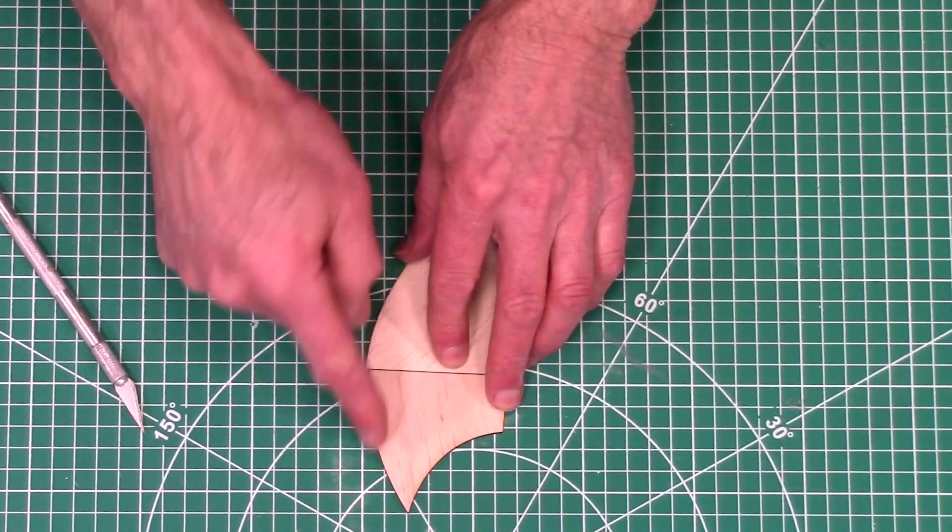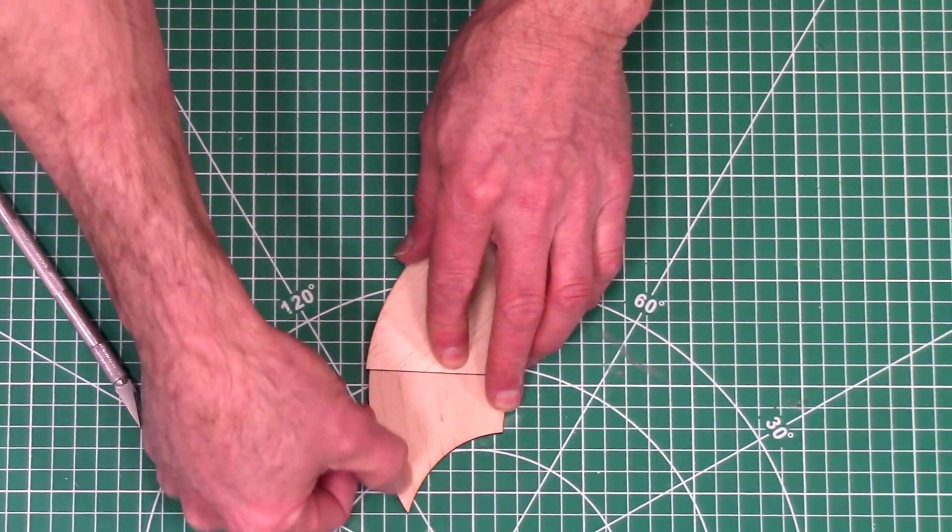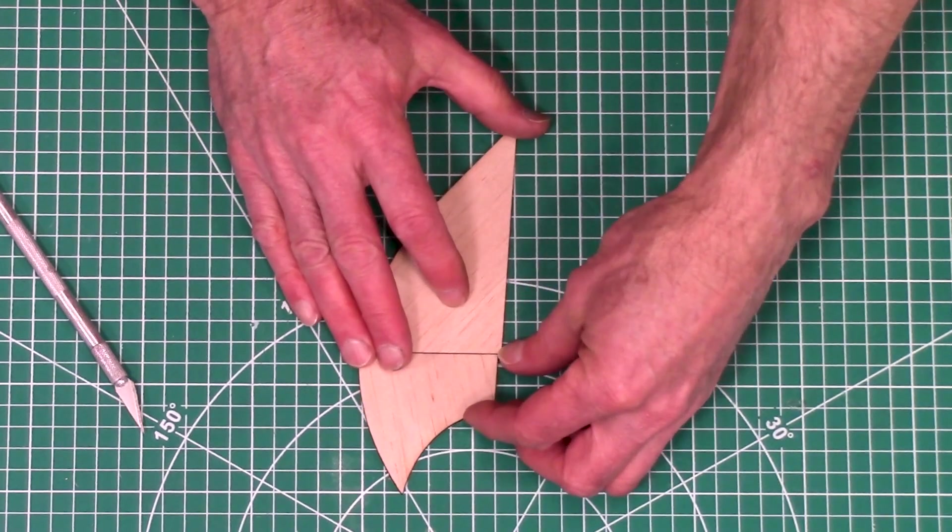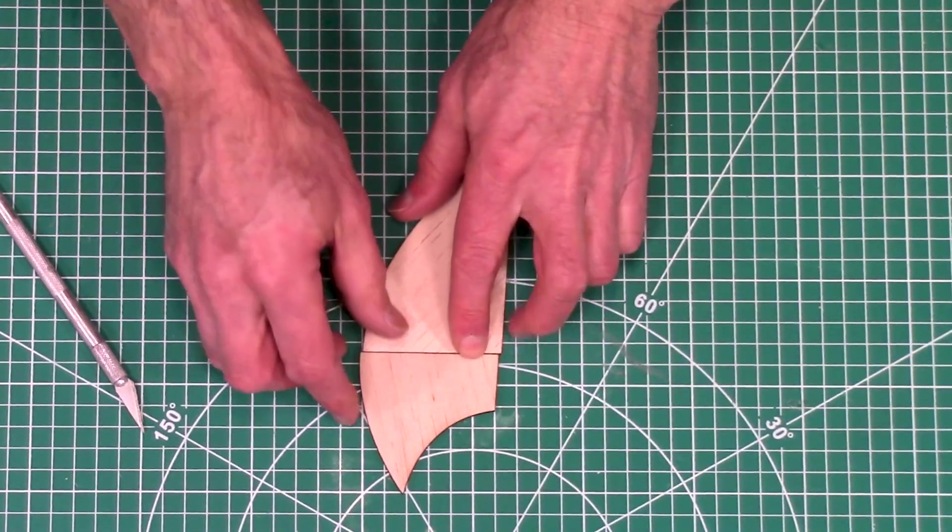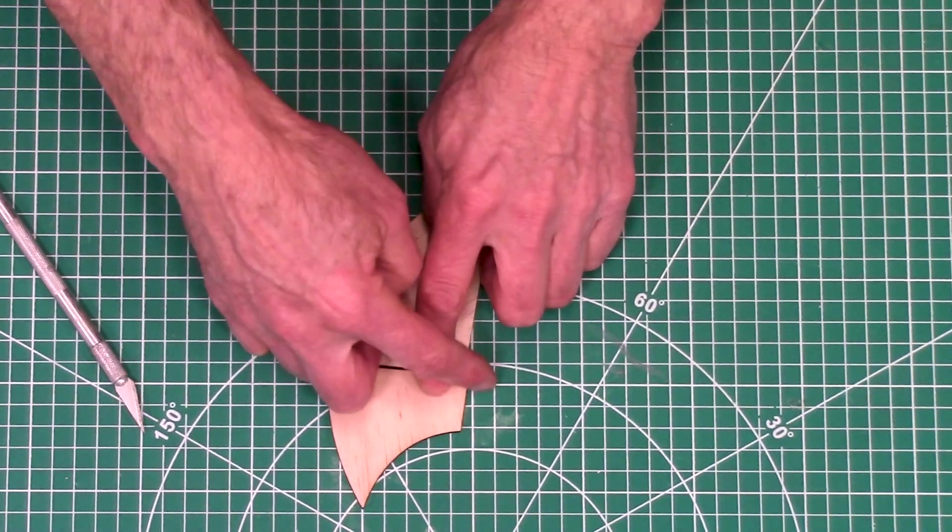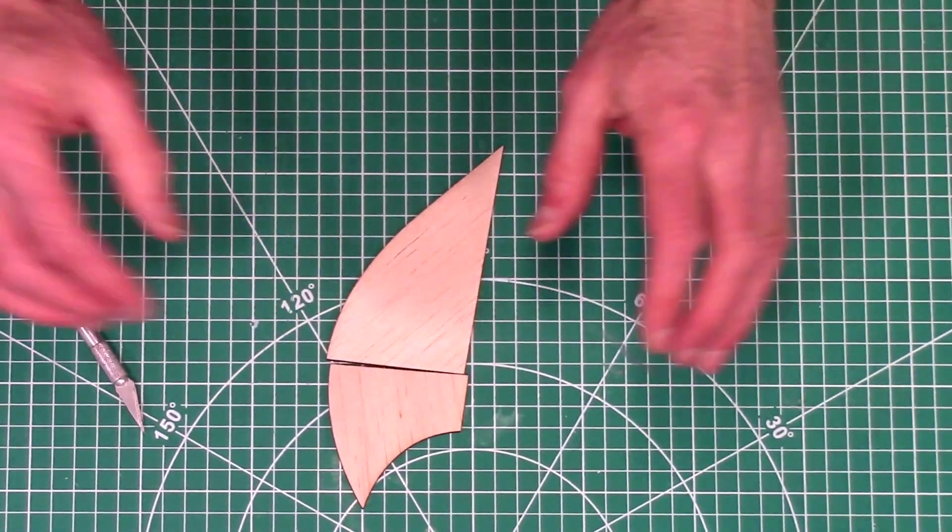And the wood grain is going this direction here, which is really strong. And if this is glued together along this seam, and then along the tube right here, we got two glue lines, and that's very strong.